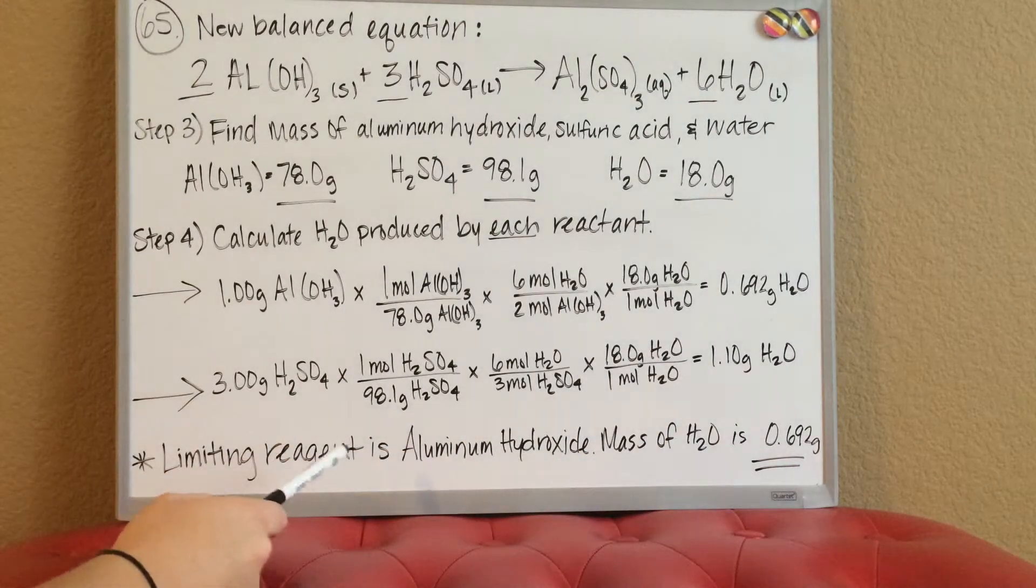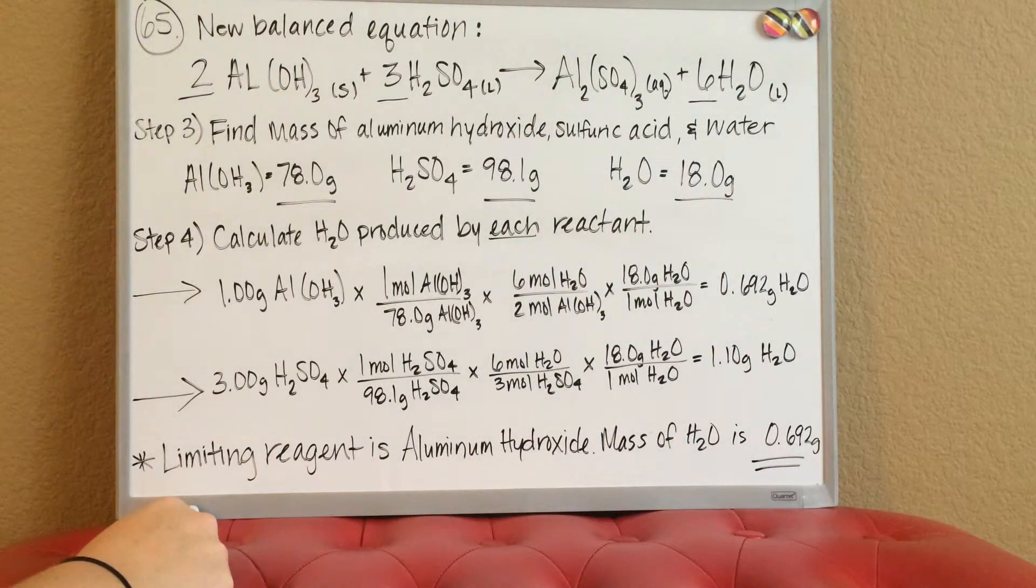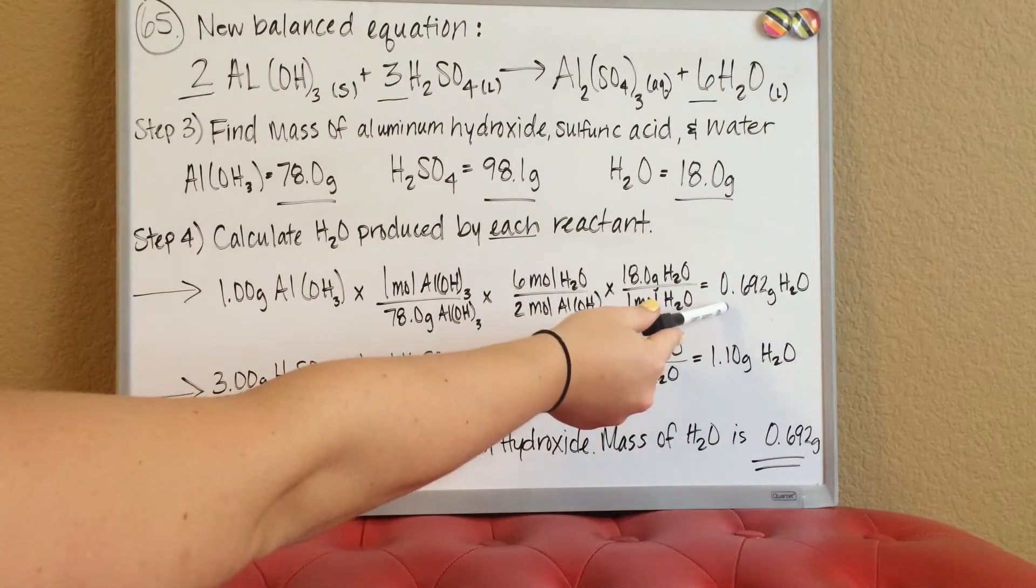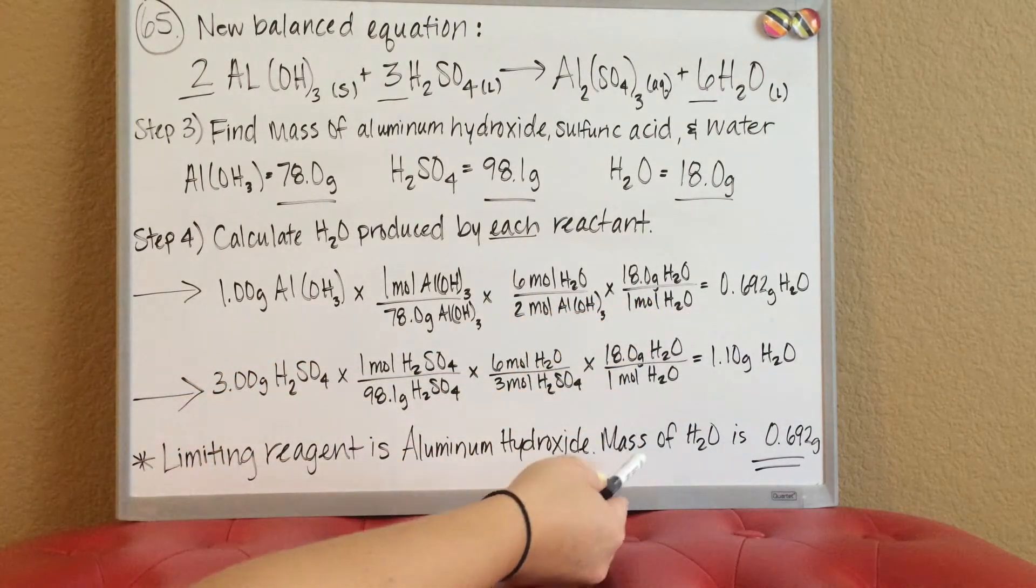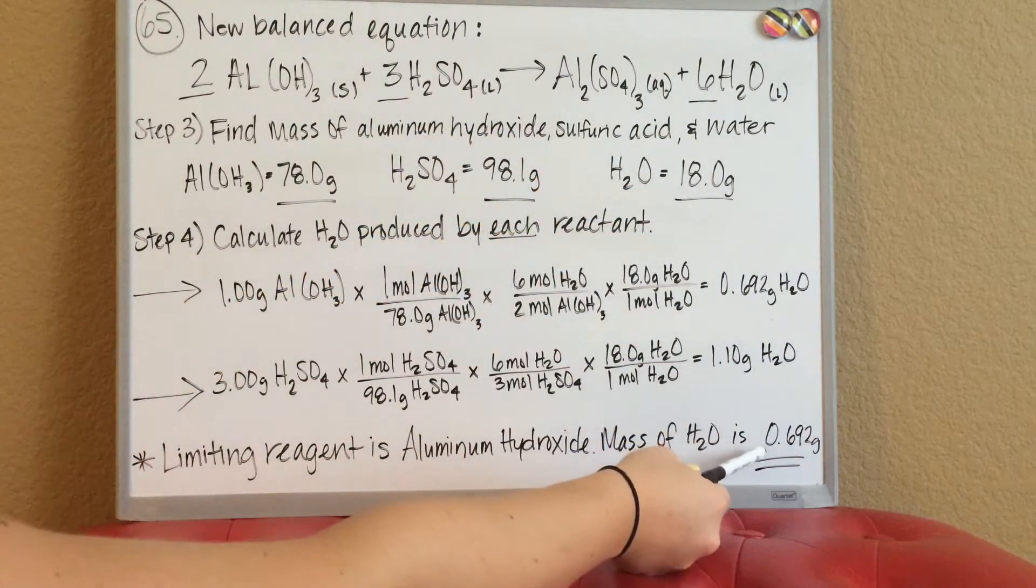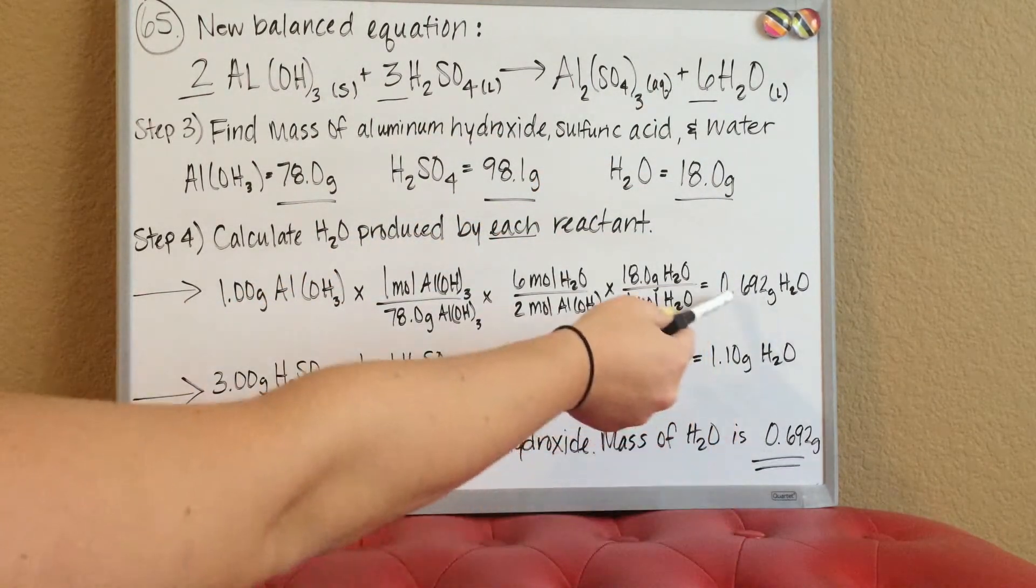We know that the limiting reagent is the aluminum hydroxide based on this being the lower value. So we can tell you that the mass of the H2O produced by this equation is 0.692 grams of H2O.